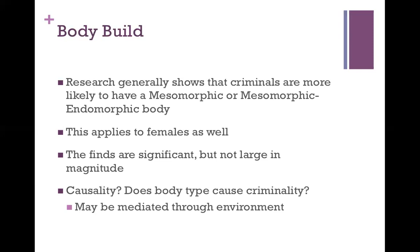For example, it could be that mesomorphs are able to bully and use aggression to get their way because of their body type — so it's not just because they inherently have criminal tendencies. Also, it's entirely possible that once people go into these institutions, they tend to work out more. So someone might enter an institution as an ectomorph, but look more like a mesomorph by the time Sheldon came around and measured them. This particular theory was popular for quite a long time.